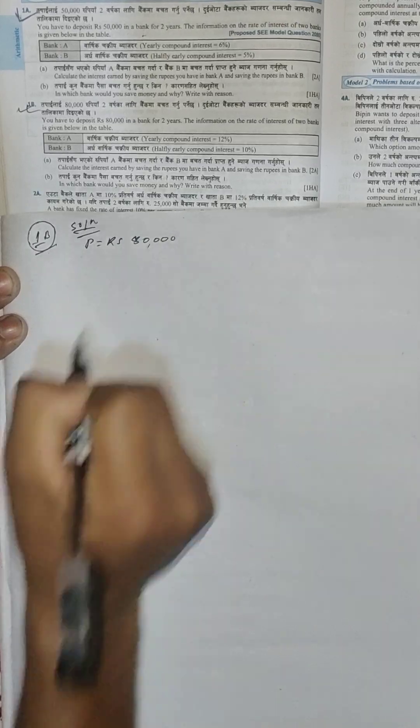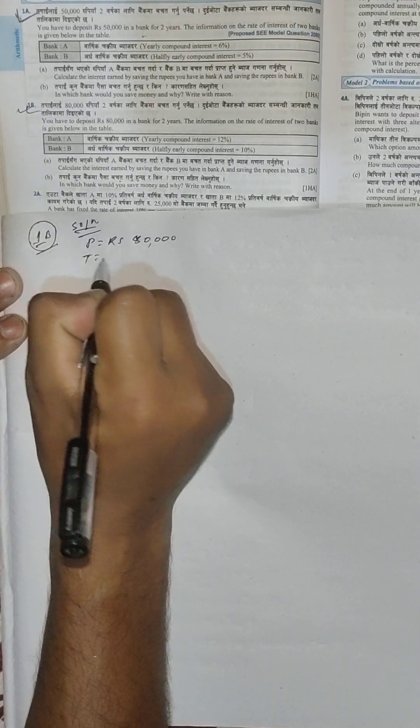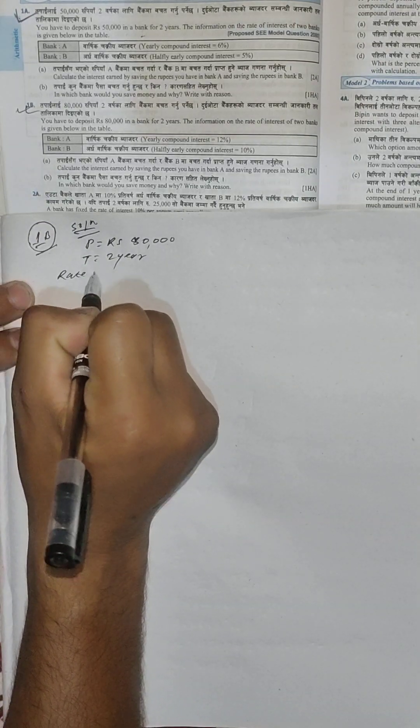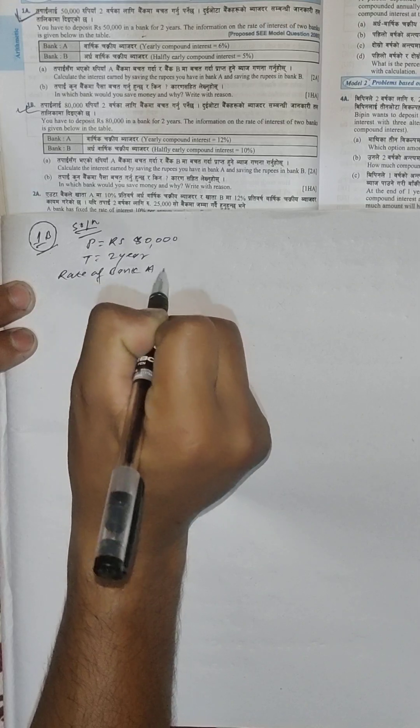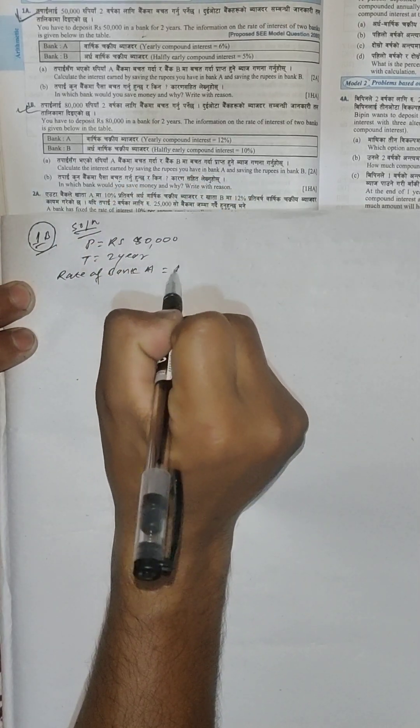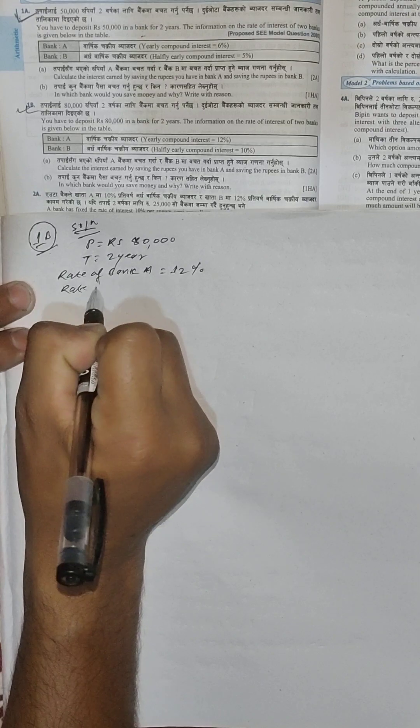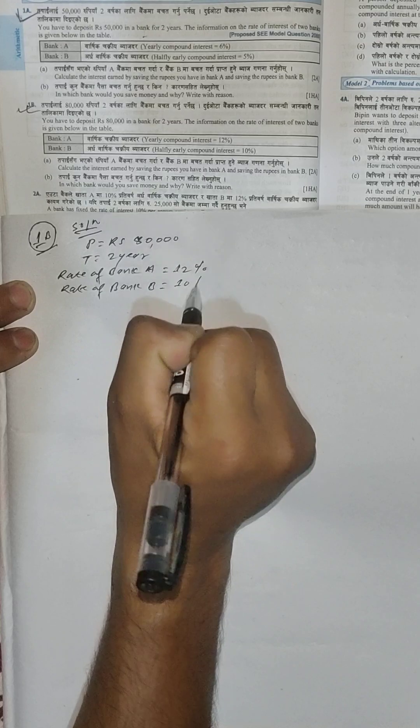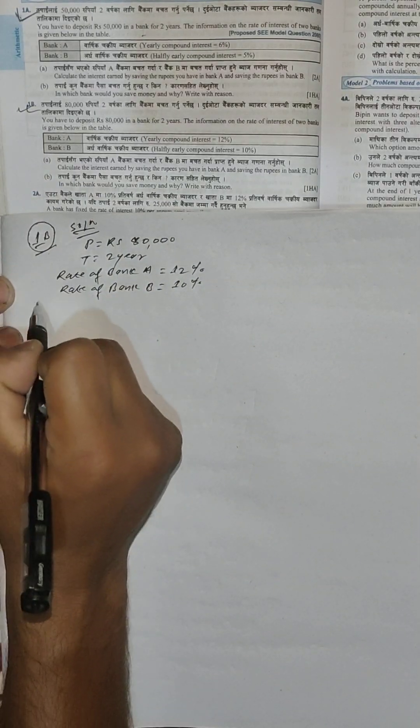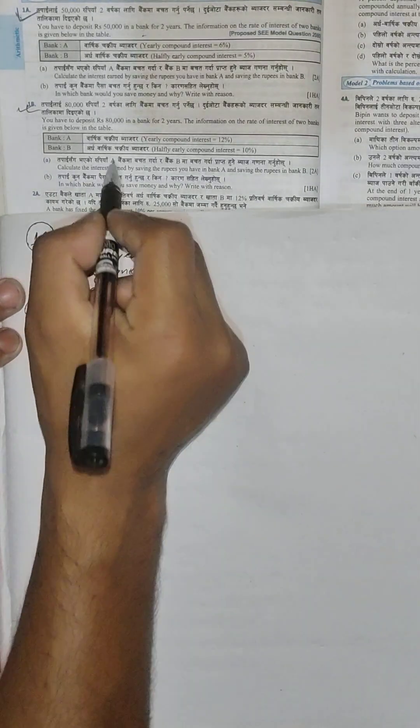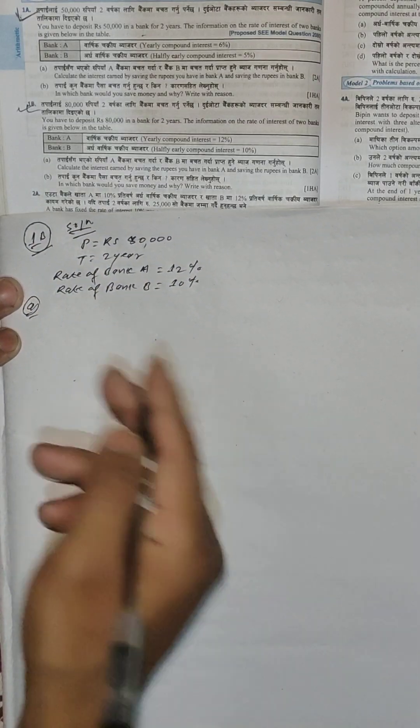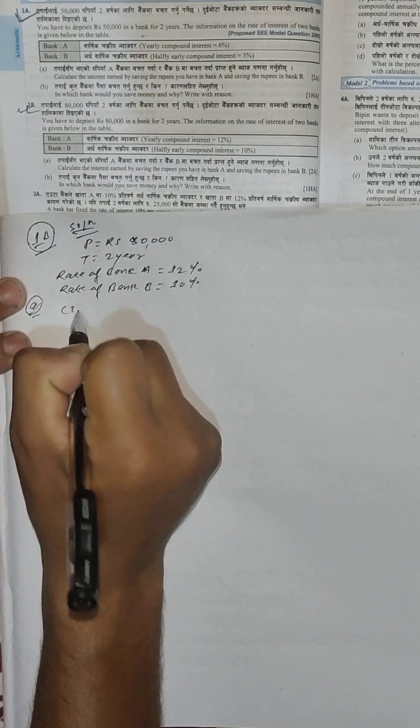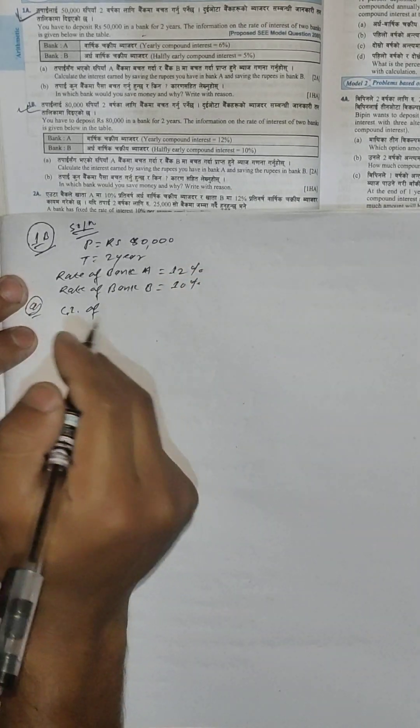Given: Principal P is Rs. 30,000. Rate of Bank A is 12%. Rate of Bank B is 10%. Now let's solve and find the interest for both banks.